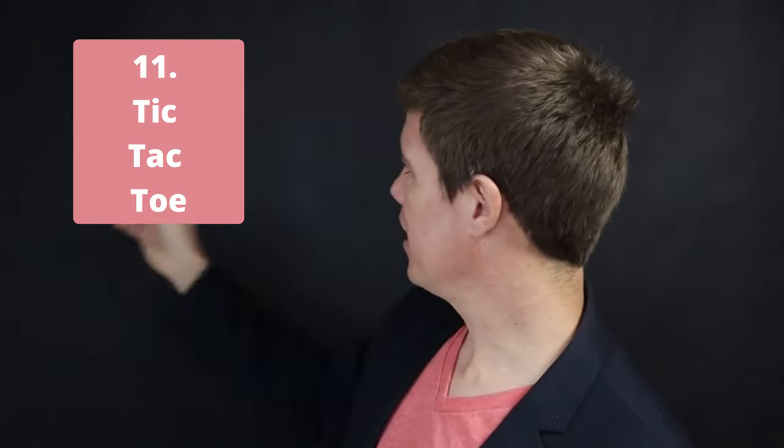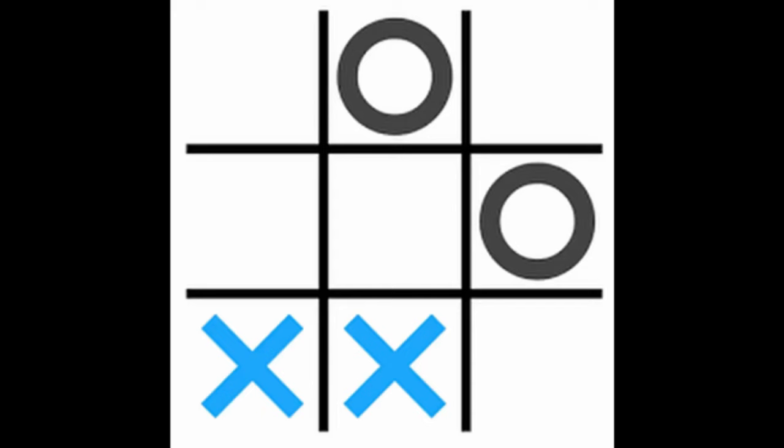Tic-Tac-Toe. Make a big tic-tac-toe grid on your board and put the students into two groups. Show a flashcard and they shout out the answer. If they are right, they can put a big circle or an X depending on what their team is. Don't worry if only one team gets a lot of answers in succession — make three in a row, give them a point, then wipe out and start a new game.